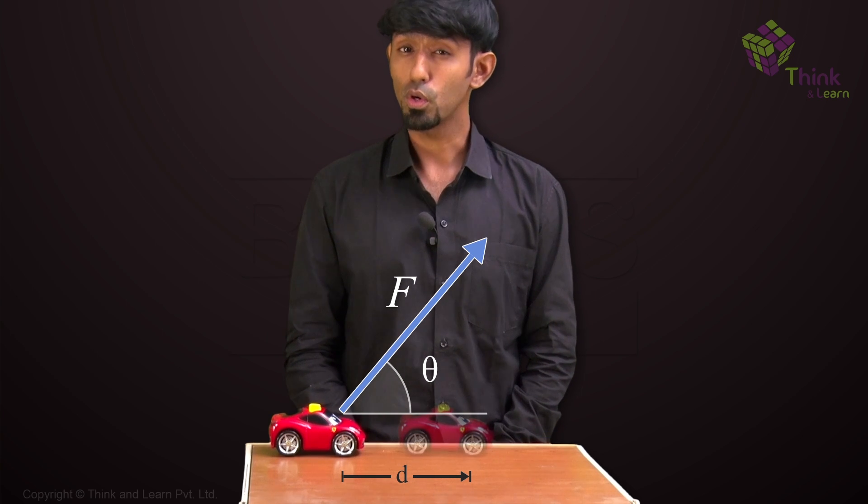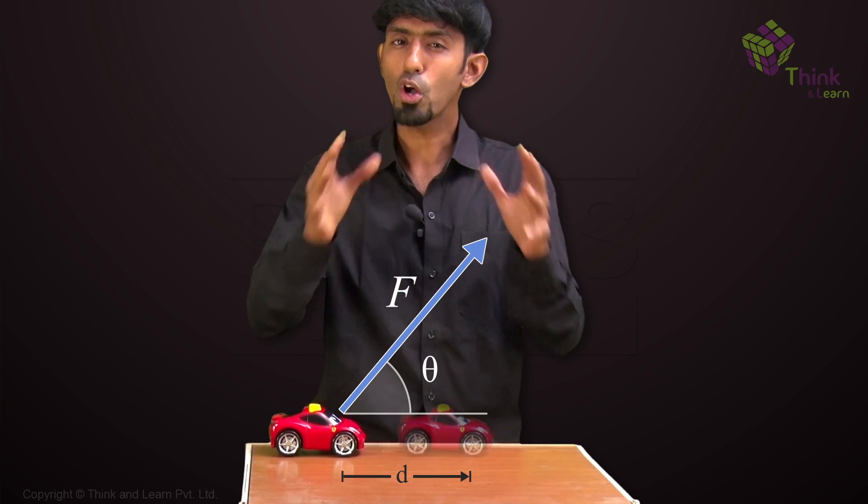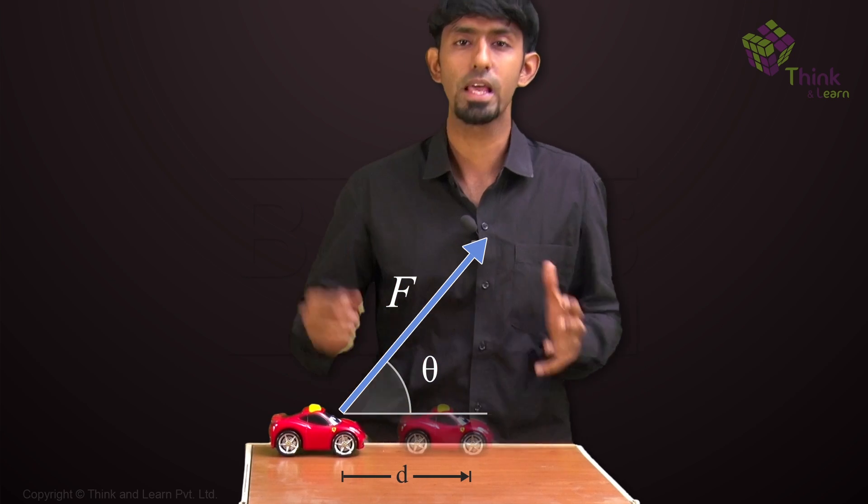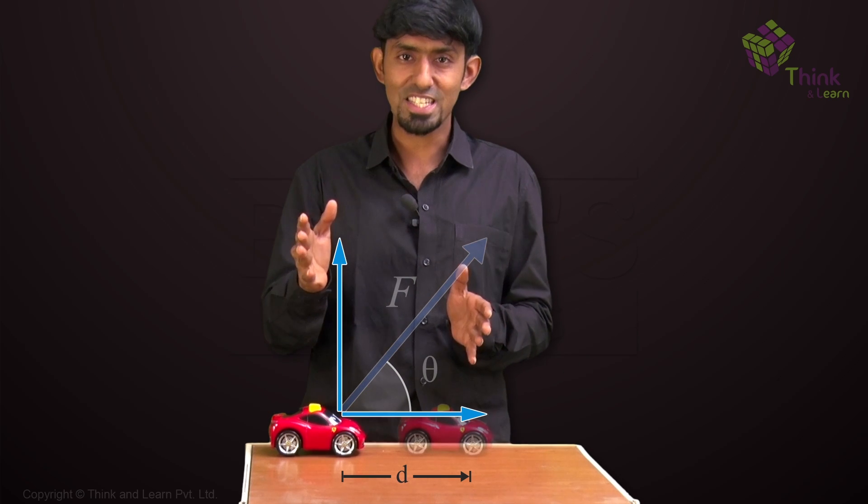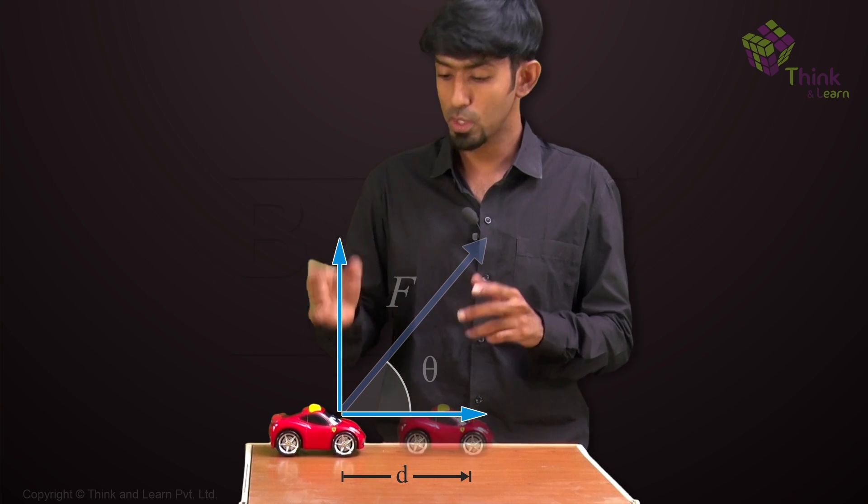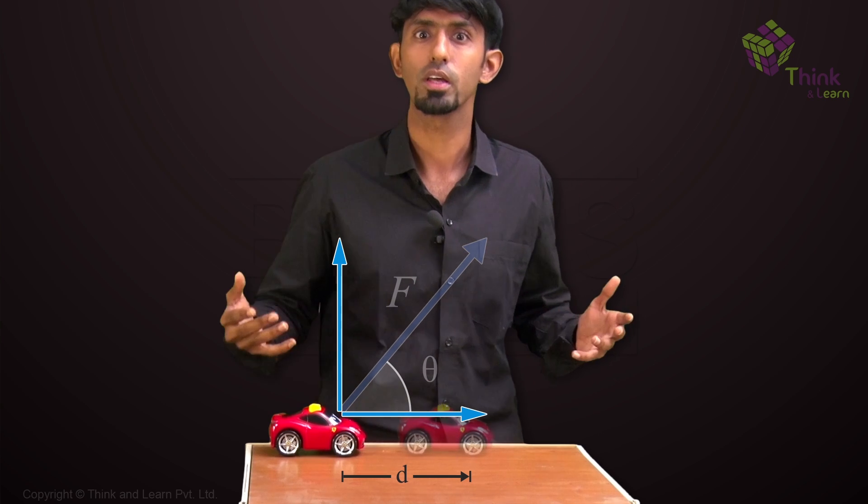Because now you know from your idea of vectors that all of the force could not have been used to displace this body. Why? You take components of this force like this. You can see that this component, the vertical in this case, could have had nothing to do with moving the body horizontally.